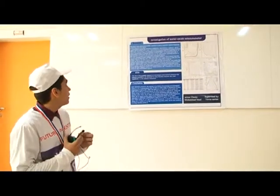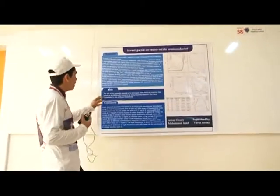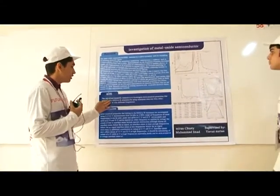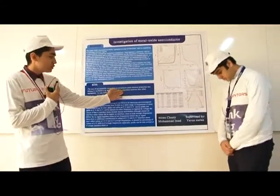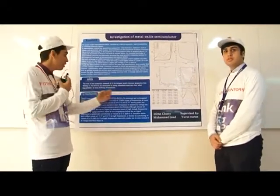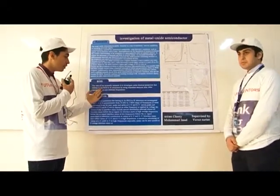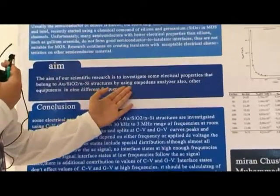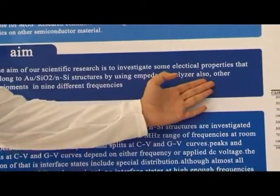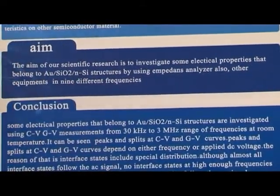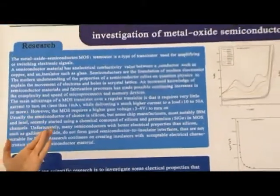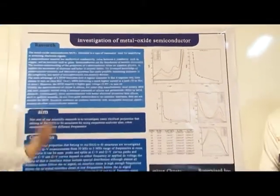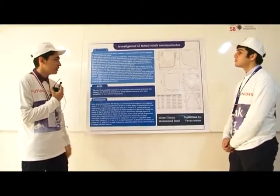Our project is about the investigation of metal oxide semiconductor. The aim of our project is the research and investigation of some electrical properties that belong to the capacitor AuSiO₂ N-type silicon. By using impedance analyzers and other equipment at nine different frequencies. The metal oxide semiconductor is a transistor used for amplifying or switching electric signals.